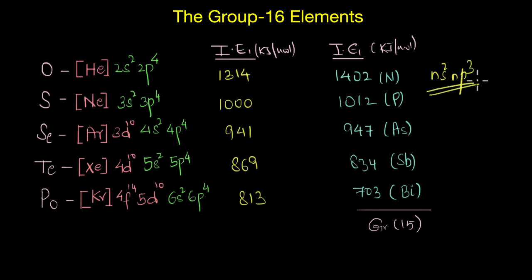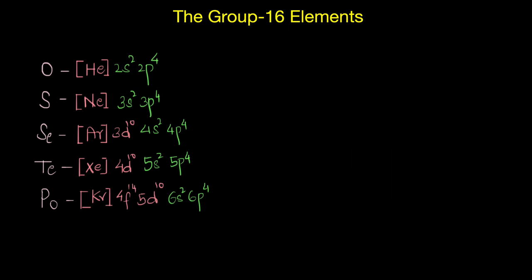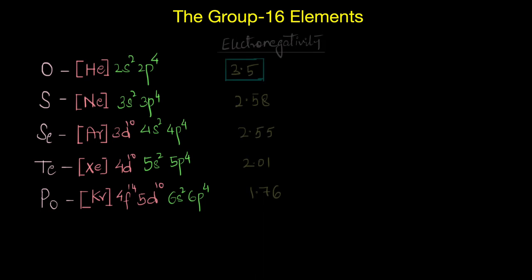This is something we have already discussed in the previous video. Clearly, the ionization enthalpy values of the Group 15 elements are higher than either of the neighboring groups — that is, both Group 14 and Group 16. Regarding electronegativity values, these also decrease as we go down the group.